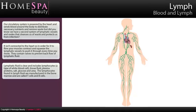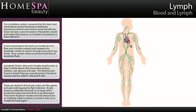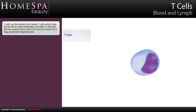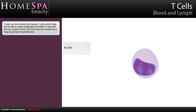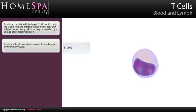The lymphocytes found in lymph fluid are manufactured in the bone marrow and are called T cells and B cells. These are stored in the lymph nodes and the spleen and wait until required to fight infection. B cells produce antibodies that lock onto bugs which invade the body and mark them to be destroyed. They never forget an invader and will always have an antibody ready to attack it should it try to invade again. T cells can be divided into helper T cells, which help the B cells make antibodies, and killer T cells, which kill any suspect body cells invaded by a bug to prevent reproduction. T cells and B cells are also known as T lymphocytes and B lymphocytes.